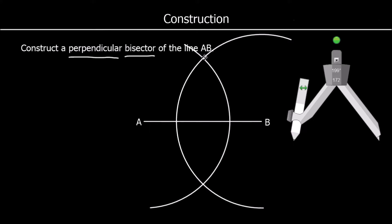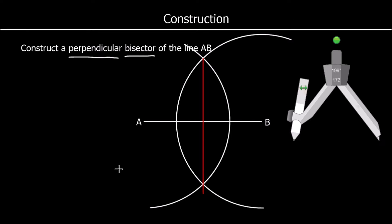We've got two intersections, and these are two points exactly the same distance away from A and B. If we join them up, we have drawn a perpendicular bisector. It's exactly in the middle and crosses at 90 degrees. This is also the locus of points equidistant from A and B — every point along this line is an equal distance away from A and B.